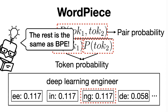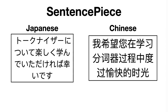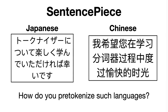Finally, the previous subword implementations assume that the input sentences are pre-tokenized, a constraint that is usually required for efficient training but makes pre-processing complicated, as we have to run language-dependent tokenizers in advance. For example, imagine that we want to use BPE encoding for Japanese or Chinese, where no explicit space exists between words — you'd have to implement different pre-tokenizers for such languages.